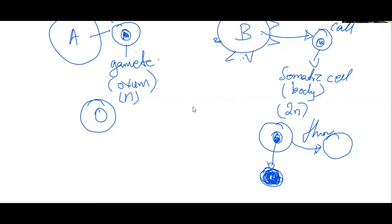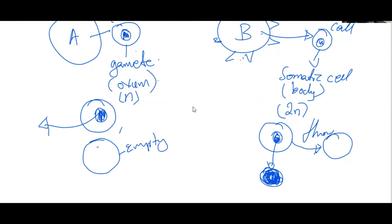Then I go to Sheep A. I don't want the characteristics of Sheep A, so I will throw the nucleus out and keep the casing. This means that the ovum from Sheep A now becomes an empty ovum — an empty casing with no nucleus.